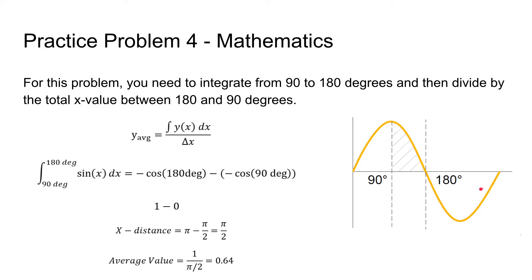So this is the equation for the average value. This is the sum where you take the integral of the function and then you divide by the change in x value, so 180 to 90 degrees. We can plug in the sine function into the integral, use the FE reference handbook, and find out that the area under the curve from 90 to 180 is going to be equal to 1.